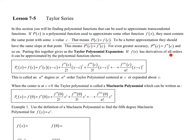Putting all this together gives us the Taylor polynomial expansion. If f of x has derivatives of all orders, it can be approximated by a polynomial function as shown. Notice that the first piece — your y value, your slope, and your x minus c — is just the tangent line approximation.